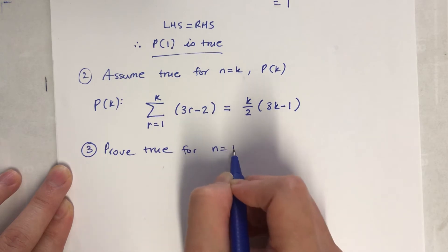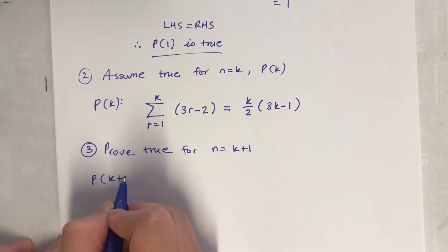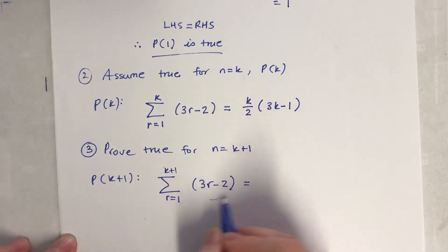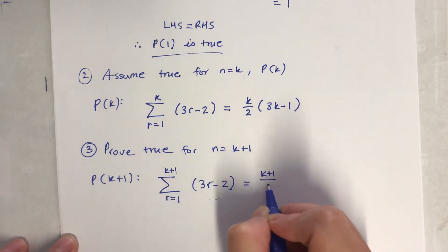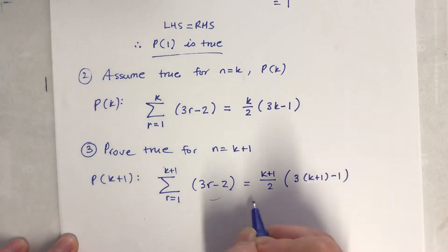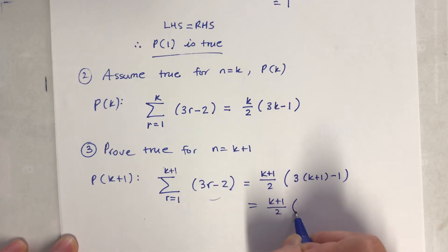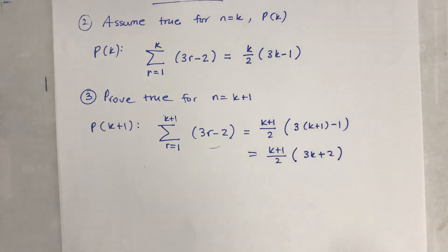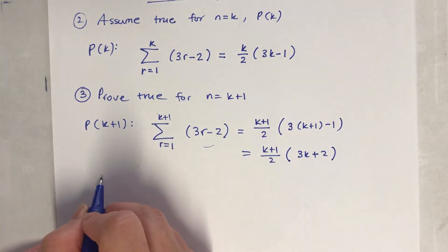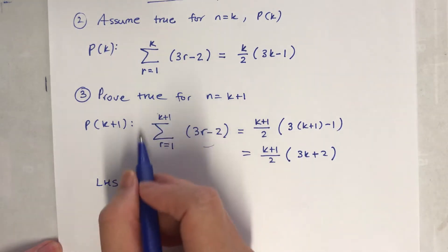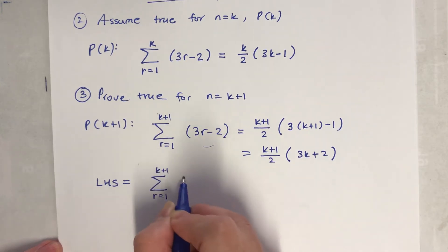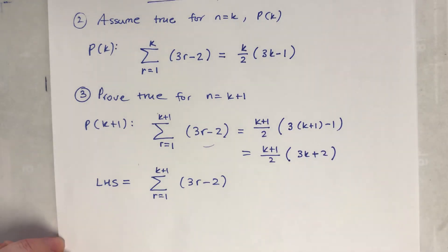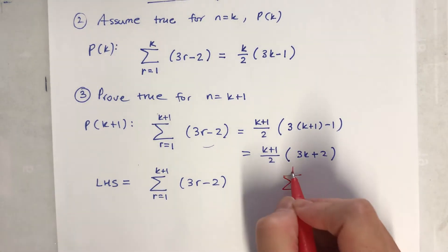Step 3: prove true for n equals k plus 1. The right hand side becomes (k plus 1)(3(k+1) minus 1) over 2, which simplifies - k plus 1 minus 1 stays, and 3k plus 2 comes out. So I need to prove the left hand side equals (k+1)(3k+2) over 2 using my assumed formula from step 2.